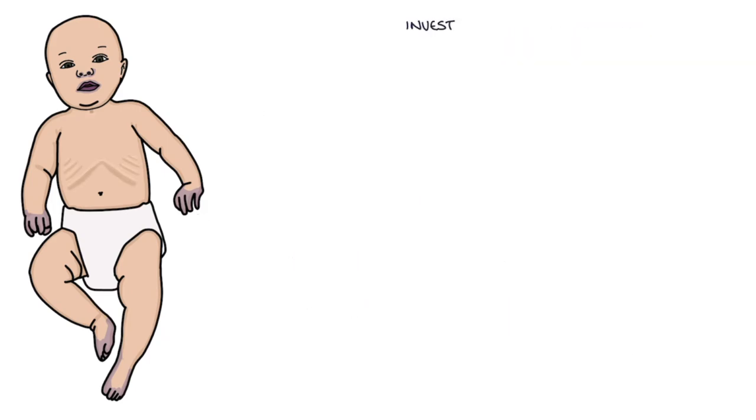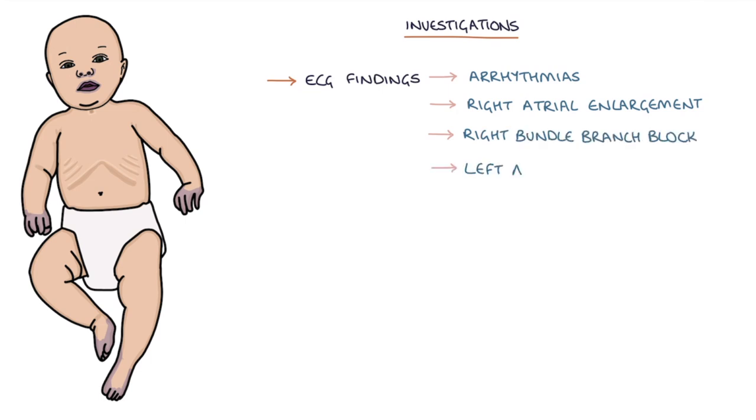Let's talk about investigations. There are a few ECG findings and these may include arrhythmias, right atrial enlargement, right bundle branch block and left axis deviation.